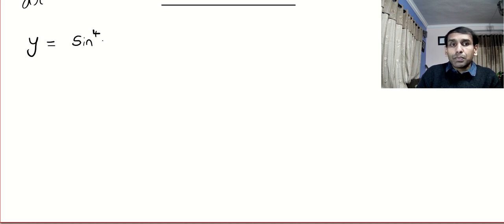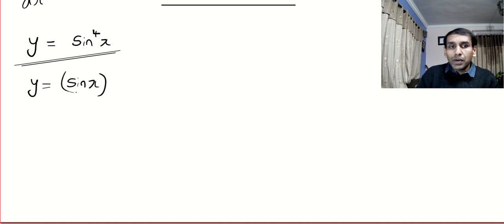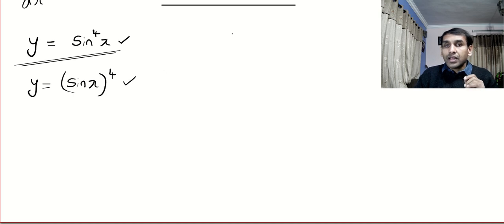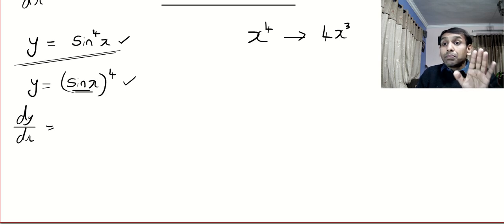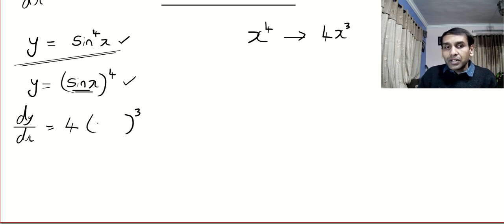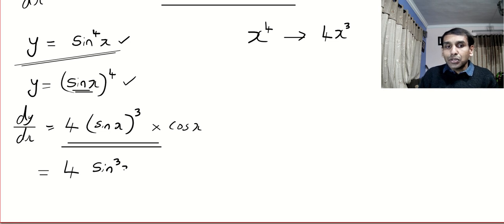Extra-important question: differentiate sin⁴x. First, rewrite it as (sin x)⁴ — this is a property from trigonometry; both forms are the same. Now it looks like something to the power 4. The derivative of x⁴ is 4x³, so the derivative of (something)⁴ is 4·(same thing)³. Multiply by cos x, because you differentiate that something. The answer simplifies to 4 sin³x · cos x.